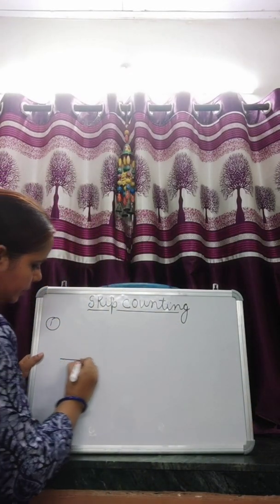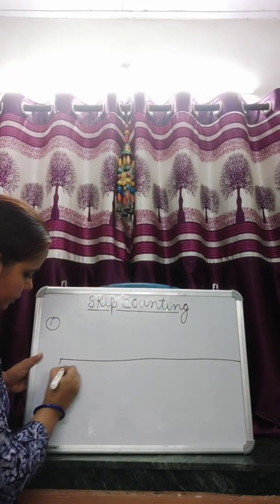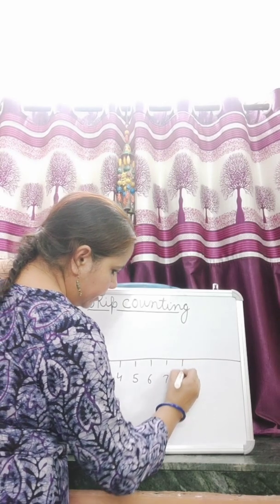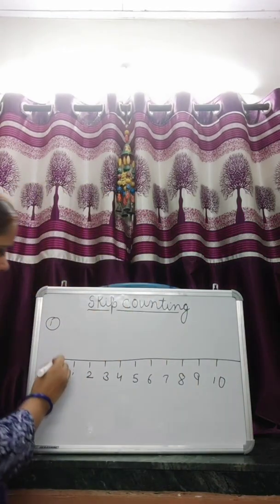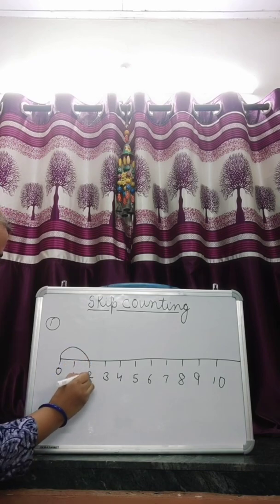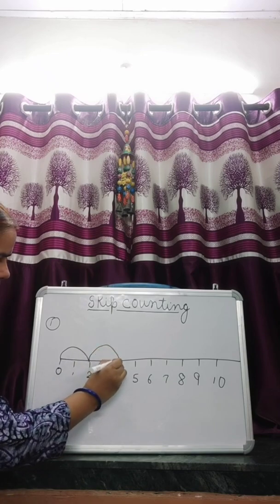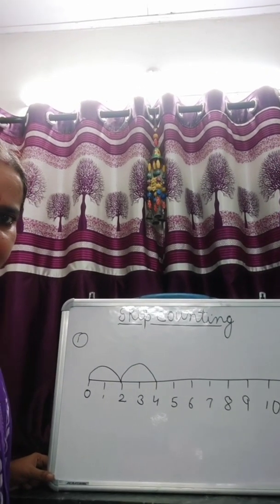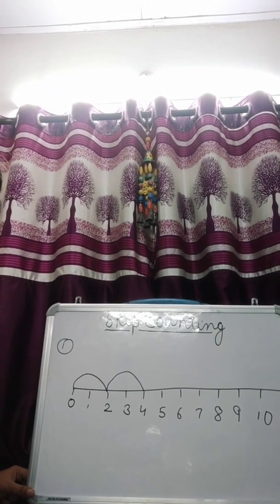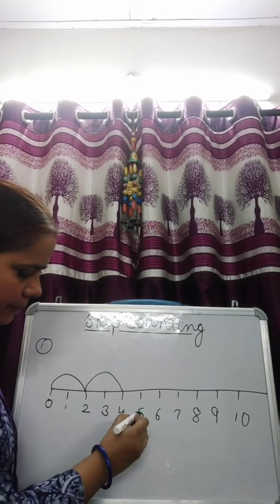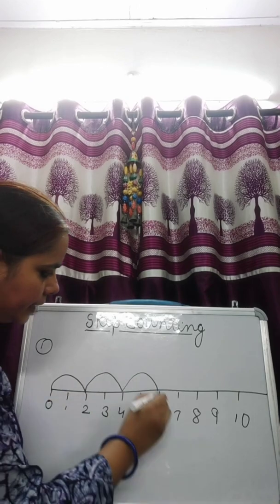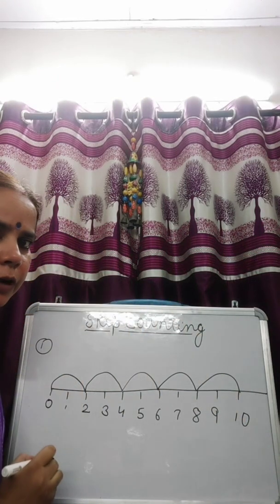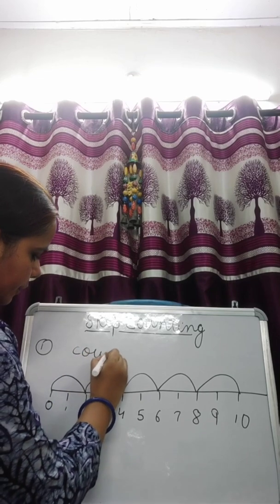Count by twos on the number line. I have made a number line. I will start from zero, skip number one and move to number two. Then from two, skip number three and move to four. Then skip five and move to six. Skip seven and move to eight. Skip nine and move to ten. This is count by twos on the number line.